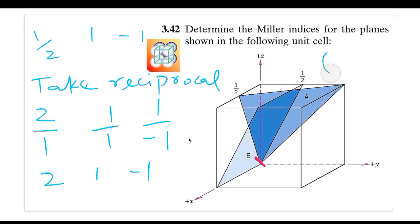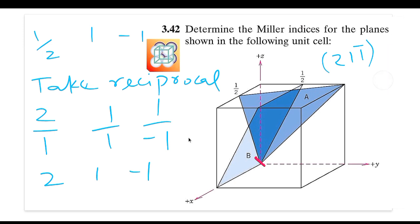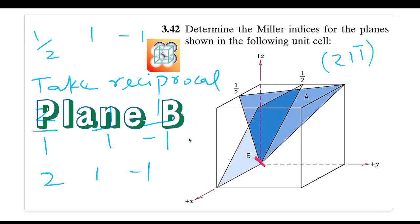Taking reciprocals of 1/2, 1, and −1 gives us 2, 1, and −1. There are no fractions involved, so these are our final Miller indices for plane A. Writing them in circular brackets: the x index is 2, the y index is 1, and the z index is −1 (written as 1-bar). The Miller indices of plane A are (2 1 1̄).